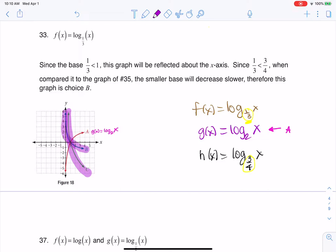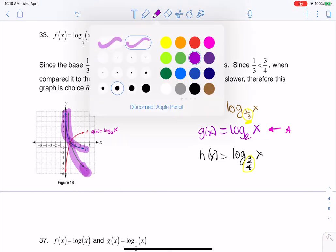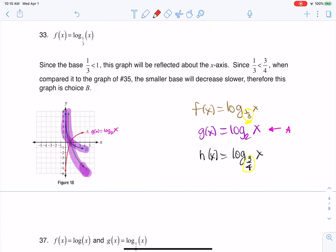It decreases faster, right? I'm lower faster, because if we want to compare at x equaling three, I'm here on this graph, but I'm much lower on that graph. So we've got a faster logarithmic decay here.